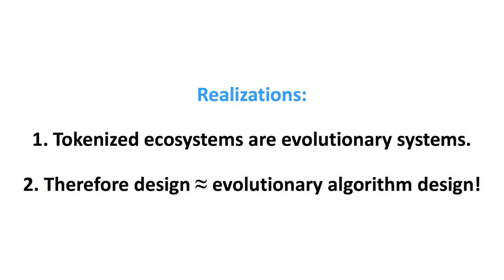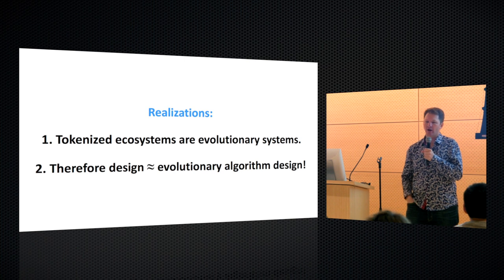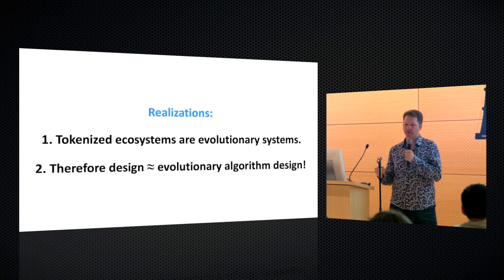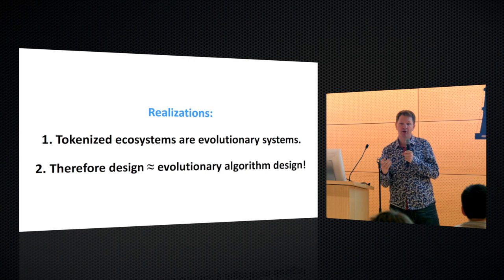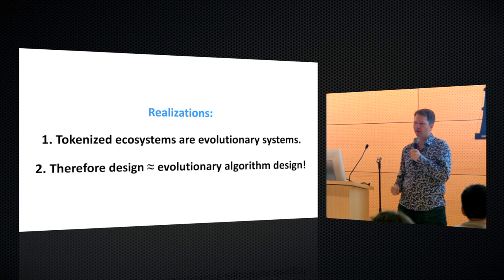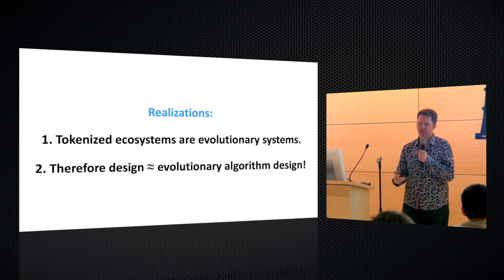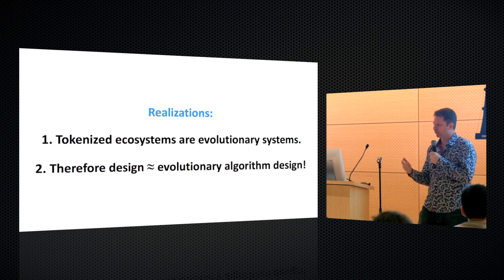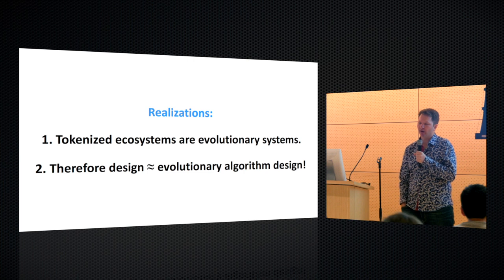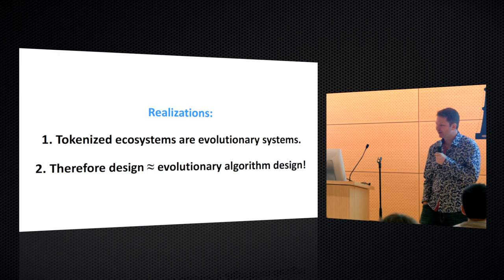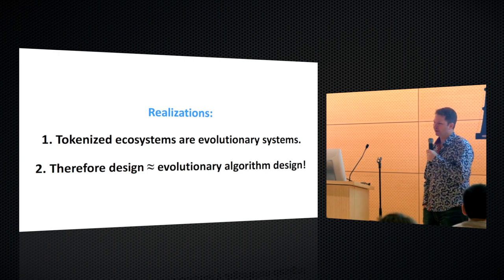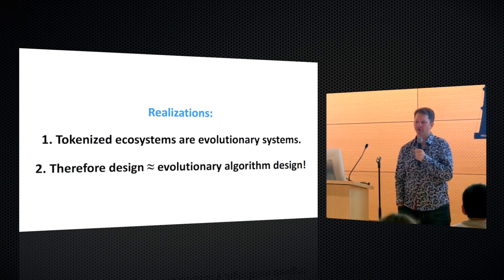I realized a couple of things. Some of us, like Simon Delervier, had noticed this: tokenized ecosystems are evolutionary systems. There's evolution happening in the sense of survival of the fittest — you have individuals called miners running around, trying to add value to the system. If the system likes the value they've added, it gives them tokens. That's actually very similar to evolutionary systems. If you have a background in designing evolutionary algorithms — and fortunately I did — you can treat the design of tokenized ecosystems as evolutionary algorithm design.